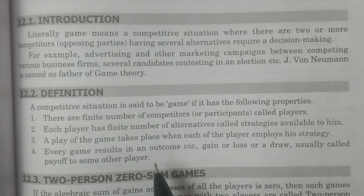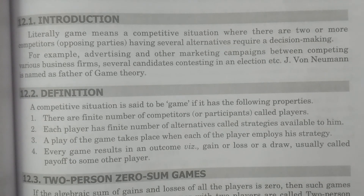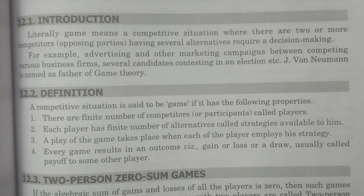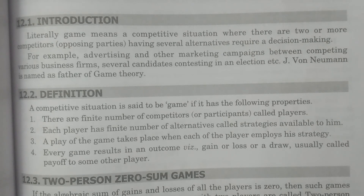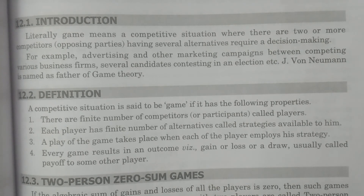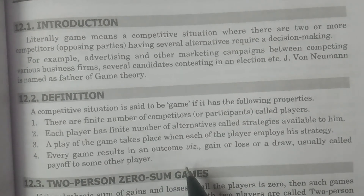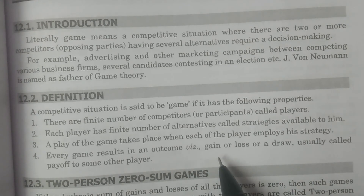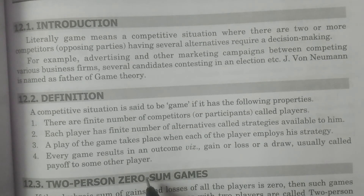A playoff occurs when each player employs his strategy. For example, with two players — player 1 and player 2 — the game starts. The fourth property: every game results in an outcome. Every game has a result — a gain, loss, or draw — which we usually call a payoff to the other player.